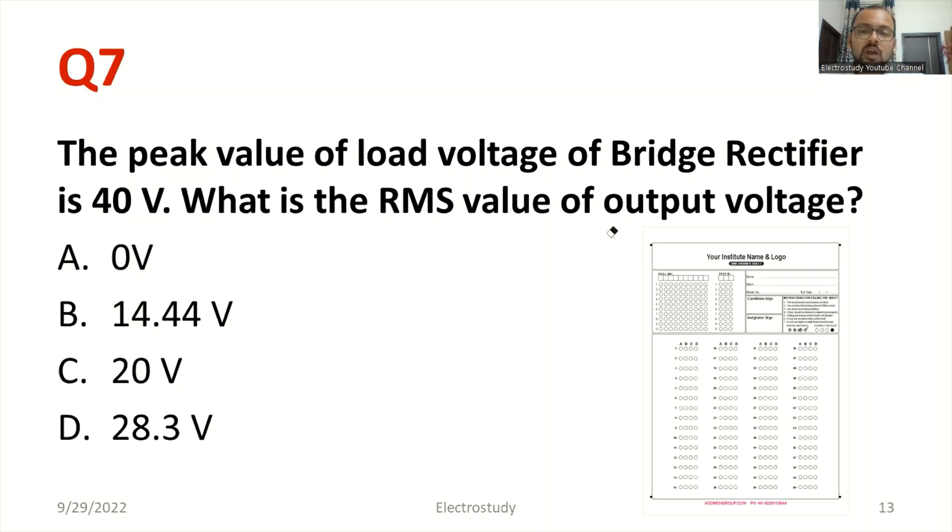The peak value of load voltage of bridge rectifier is 40 volt. What is the root mean square value of output voltage? You already know that. What is the RMS value? So we can write V RMS equal to Vm by root 2, where Vm is the maximum value or peak value. So peak value is already given 40, 40 divided by root 2. If you solve 40 by root 2 is nothing but 28.3 volt. This will be the ultimate answer. So which option will you select? Obviously, I'm gonna select option D. I think it's clear to everyone.